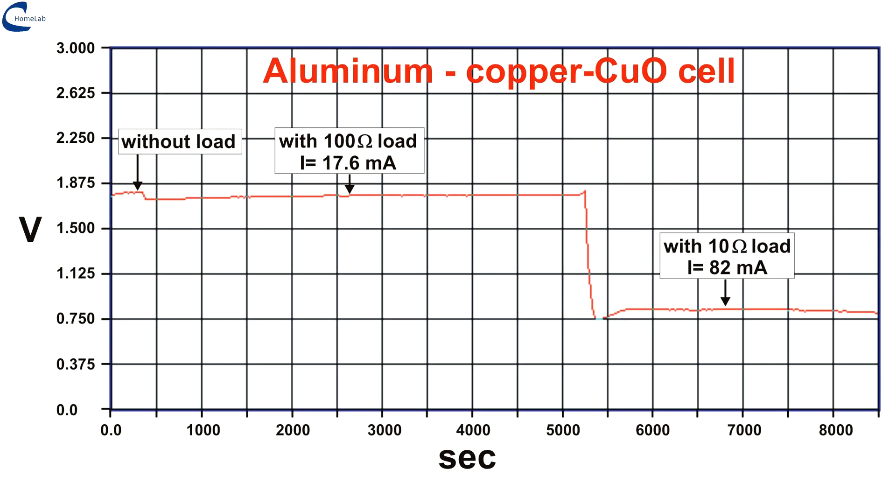With a load of 100 ohms, the current delivered to the resistance is 17.6 milliamperes with voltage of 1.76 volts. With a load of 10 ohms the current is 82 milliamperes with a voltage of 0.82 volts.